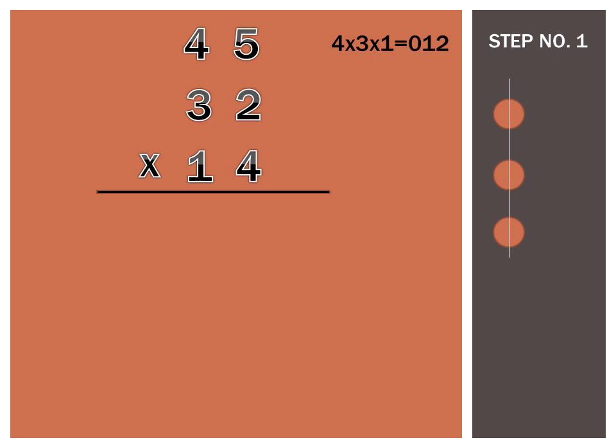4 times 3 times 1 is actually equal to 12. But we will write it as 0, 1, 2 because the required number of digits is always 3. And then this new circle actually represents the number 5, the 1st digit of the number 45. Another circle representing 2 of the number 32. And then this new circle representing the number 4 of number 14, the last digit of 14.